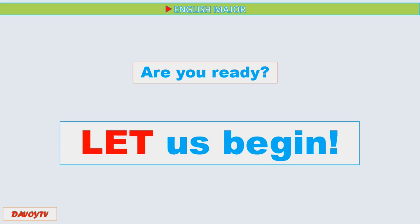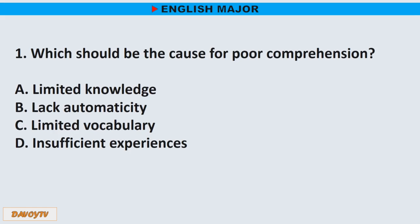Question number 1. Which should be the cause for poor comprehension? A. Limited knowledge. B. Lack of automaticity. C. Limited vocabulary. D. Insufficient experiences. The correct answer is letter C. Limited vocabulary.